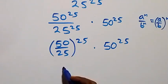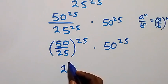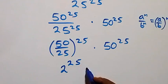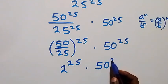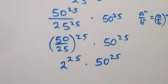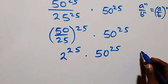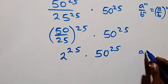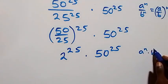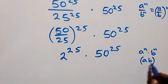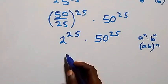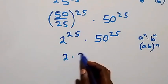Here we can reduce 50 over 25, which gives 2. So we have 2 raised to power 25 times 50 raised to power 25. Applying the law of indices — a raised to power n times b raised to power n is the same thing as (a times b) raised to power n.